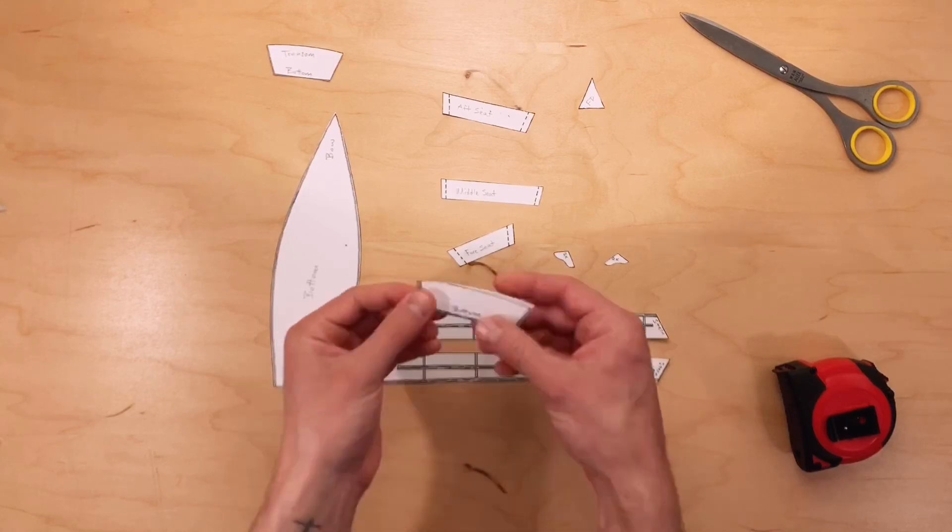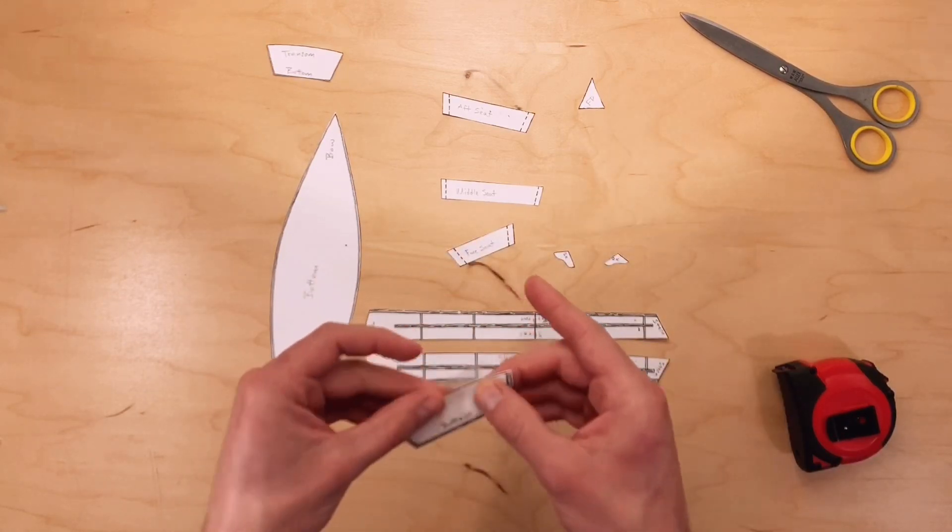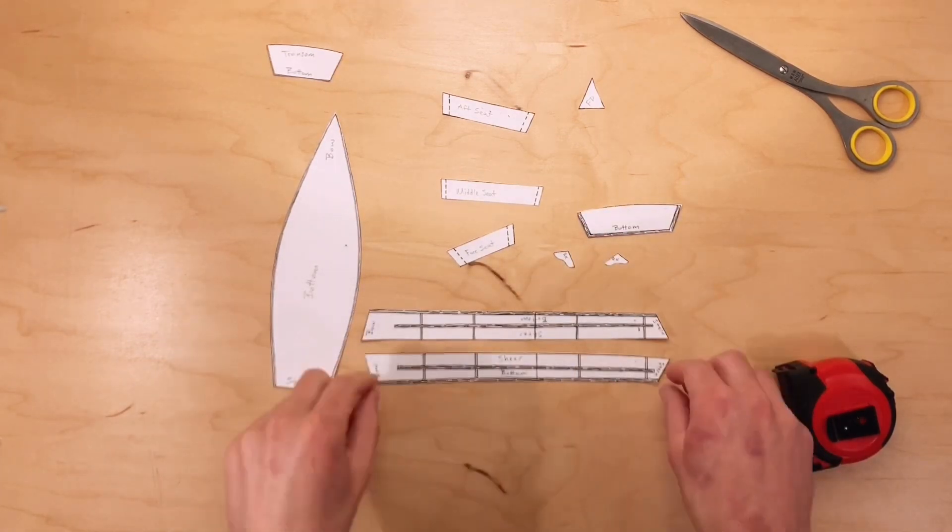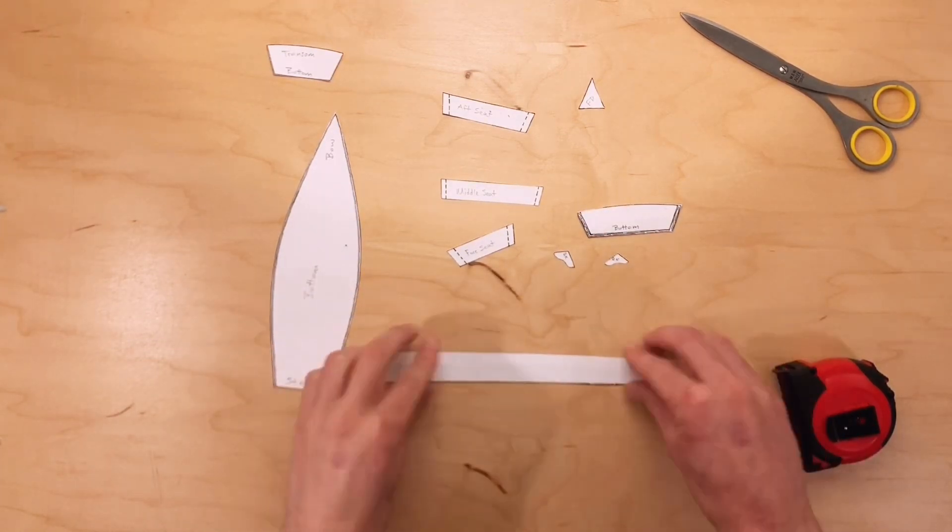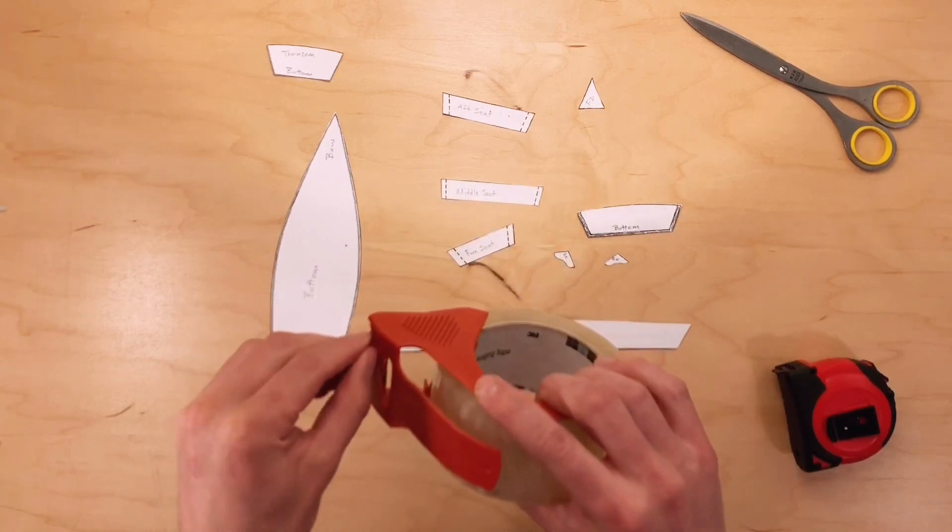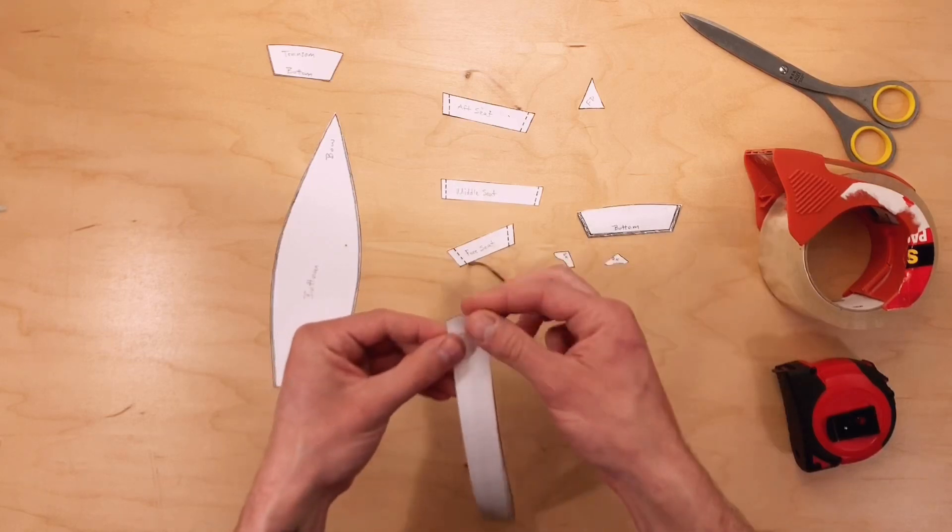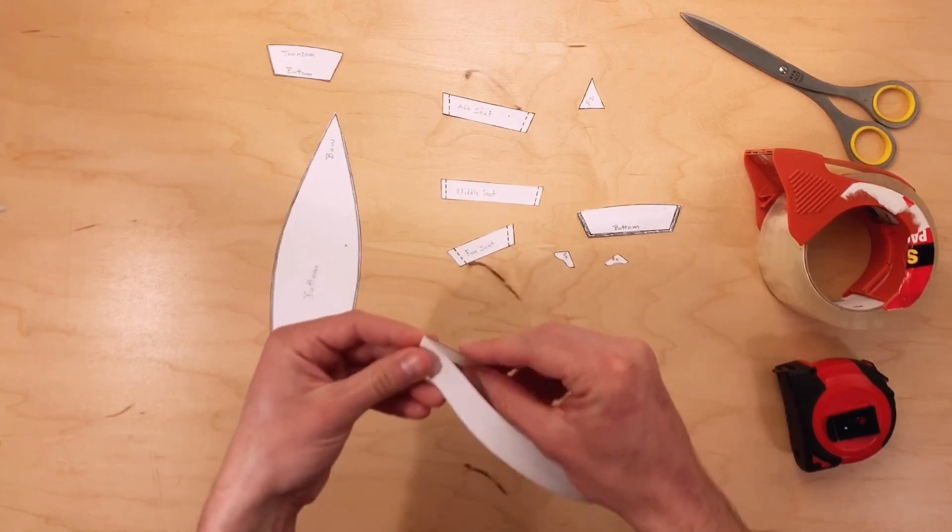Next, I need to fold the center frame piece in half to give it more stability and then tape it together before installing it in our boat. Now, assemble the pieces. Start by flipping one side over onto the other side. I'm also taping these together at the bow.